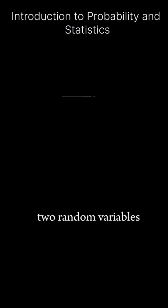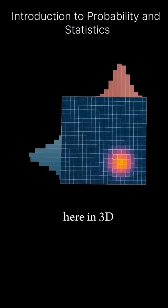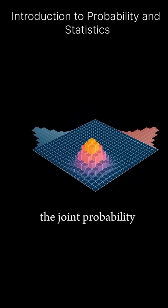Now let's consider two random variables, x and z. What you see here in 3D is what we call the joint probability distribution of x and z. This represents the probability of each possible pair of events occurring together.